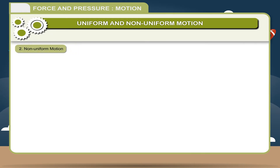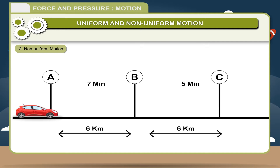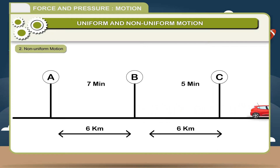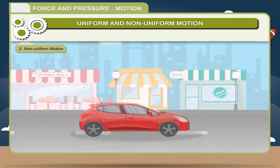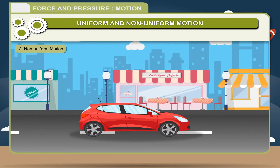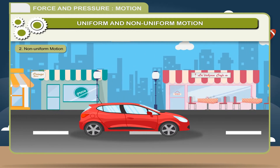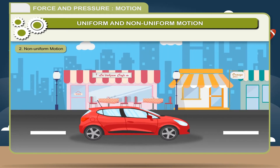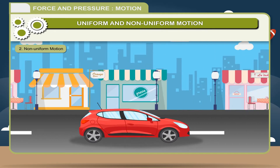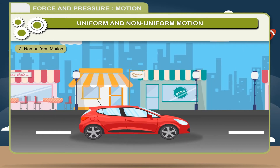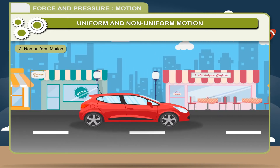Non-uniform motion: if an object does not cover equal distance in equal interval of time, it is called non-uniform motion. If the body covers equal distances in equal interval of time but the direction of motion keeps on changing, then also the body is said to have non-uniform motion.